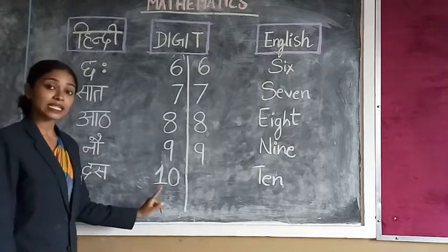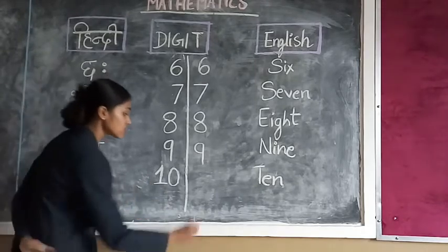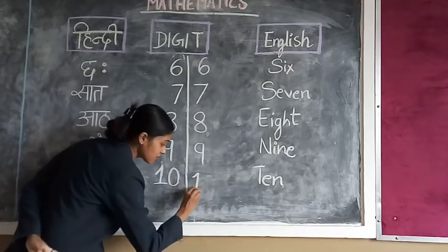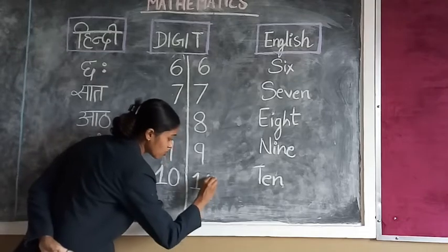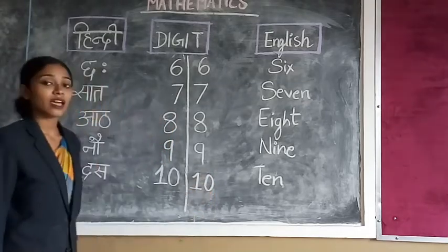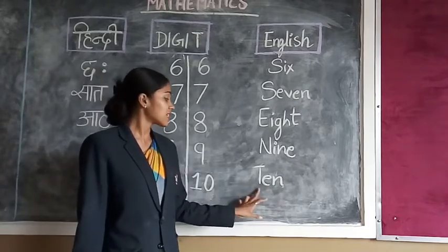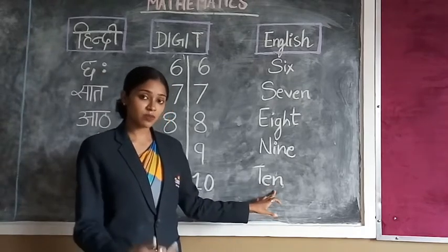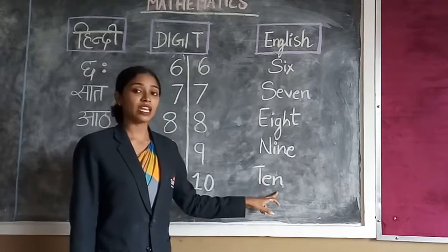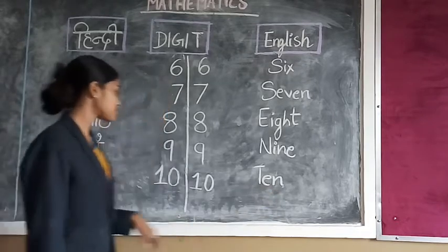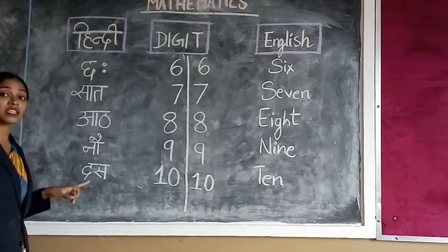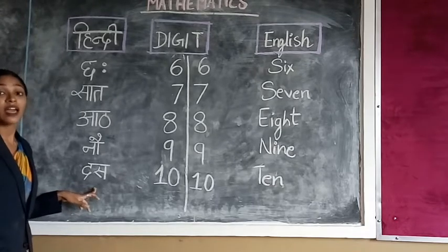Then the next number, ten. Ten kya henge henge, students? One and then zero. So, ye mo jahe henge. Ten. And what is the spelling of ten? T-E-N. Say with me. T-E-N, ten. And this is how we can do our students. Ten. Das.